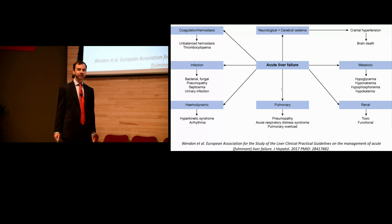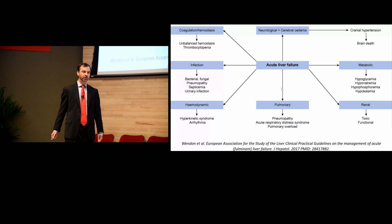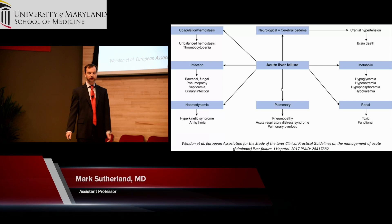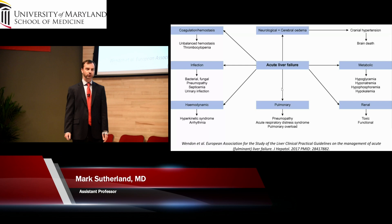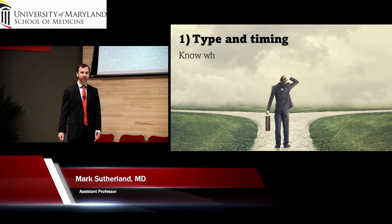These patients get rip-roaringly crazy sick and can be very challenging to manage. This diagram from the European guidelines highlights that if the liver is gone, you can expect basically all other organs to follow, and these patients go into pretty florid multi-organ failure quickly. I'm going to give you 10 tips on how to manage the acute liver failure patient who's right in front of you.